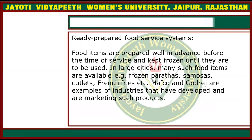The most important is your ready-prepared food service system. In this system, food items are prepared in advance before the time of service. We have prepared the food and kept it in the frozen stage. There are many examples in large cities: frozen parathas, samosas, cutlets, french fries — all available in frozen form. Also items like Maggi are ready-prepared because all the masala and ingredients are ready — you just have to boil water and put it in.